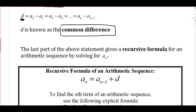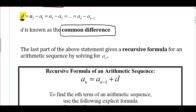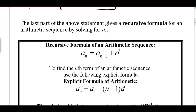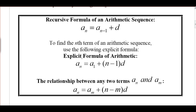If we take a look at d and solve for a sub n, what we end up with is a recursive formula for an arithmetic sequence. So a sub n is a sub n minus 1 plus d. Each term is the term before it plus the common difference. Keep in mind the common difference could be positive or negative, so the numbers could be getting smaller as well. That's our recursive sequence formula.